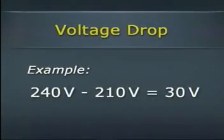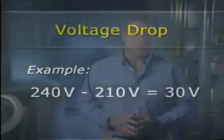Another factor to consider is the voltage drop in the conductors. The voltage drop is the difference between the measured voltage at the distribution panel and the measured voltage at the piece of equipment. Any drop in voltage is lost to the equipment. For example, if there are 240 volts at the supply and 210 volts at the equipment, there's a voltage drop of 30 volts. The maximum recommended voltage drop in any given branch circuit is 3%, which is 3 volts for every 100 volts being supplied.